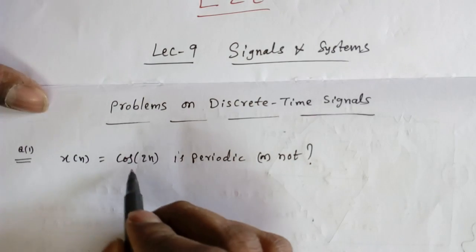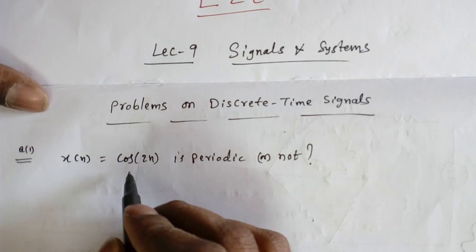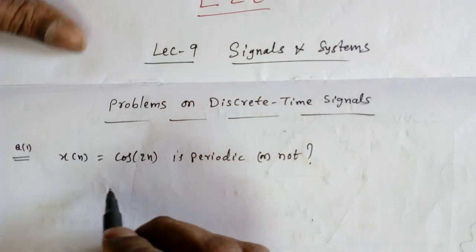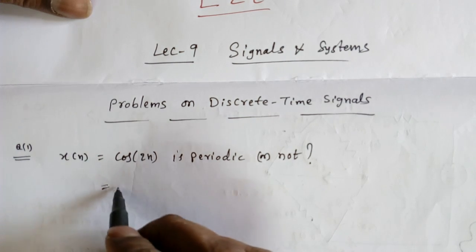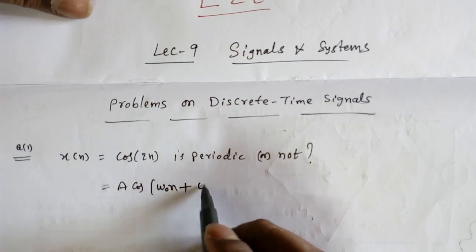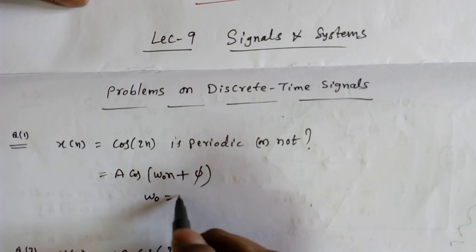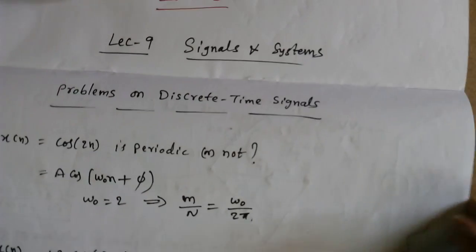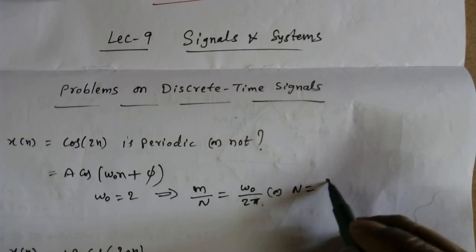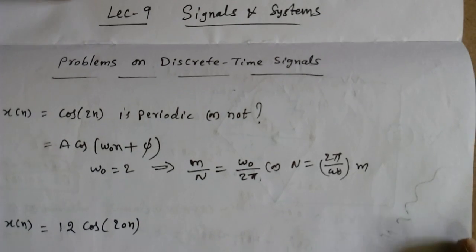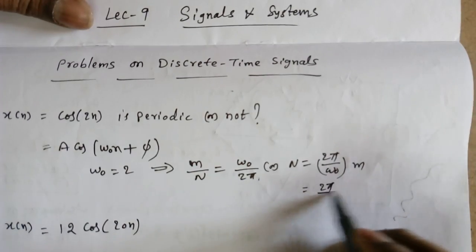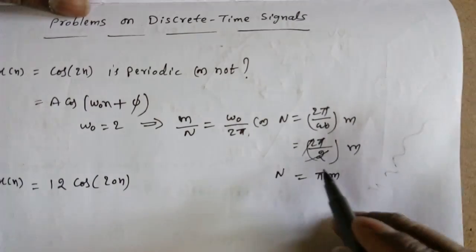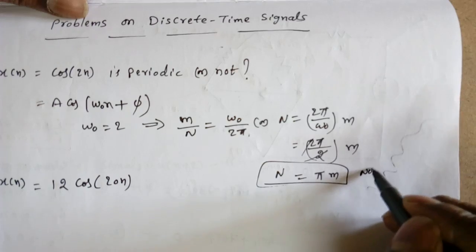Now, whenever we have a discrete sequence, if cos or exponential does not contain π, it is a non-periodic signal. We compare with cos(ω₀n + φ). From this, ω₀ = 2. We know N = (2π/ω₀)·m = (2π/2)·m = π·m. Since π is an irrational number, it is not a periodic signal.